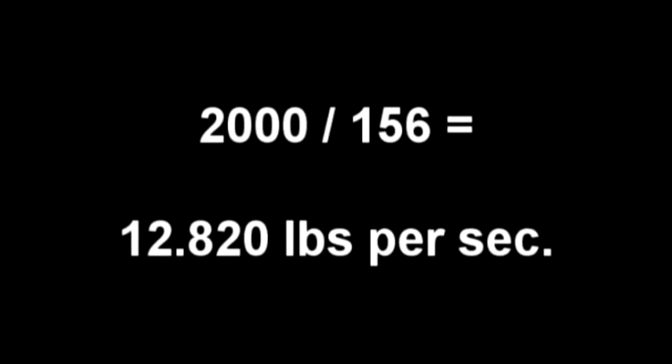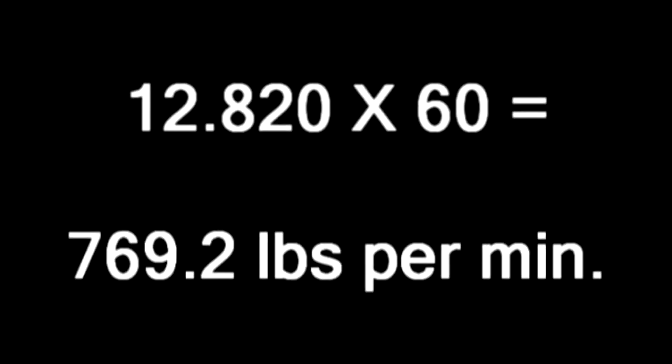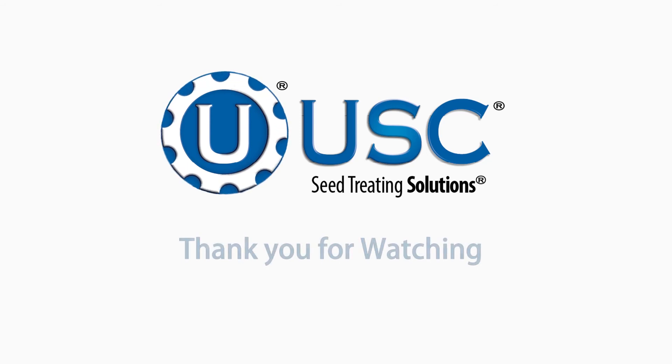In our example, 2000 pounds ran through the seed treater in 2 minutes 36 seconds, or 156 seconds. Take 2000 and divide by 156 to get 12.82 pounds per second. Multiply 12.82 pounds per second by 60 seconds to get 769.2 pounds per minute. 769.2 pounds per minute is our current seed flow rate.